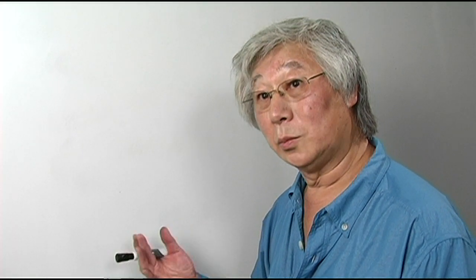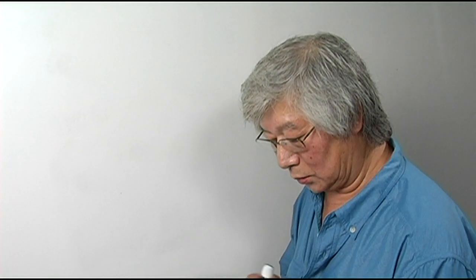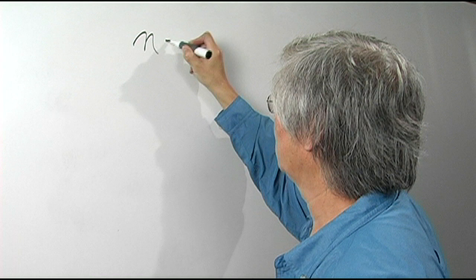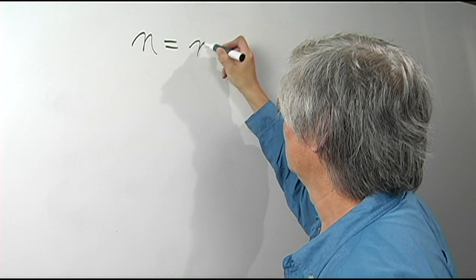When a number is multiplied by itself a number of times, then we can write it in shorthand form. Let's look at the number n. We're going to multiply it by itself.